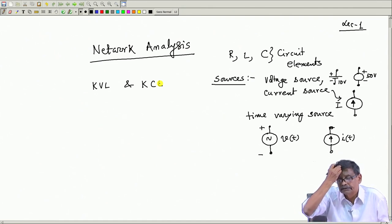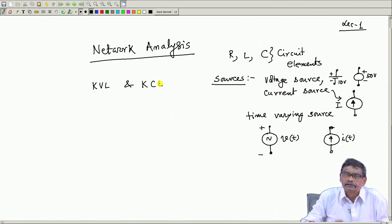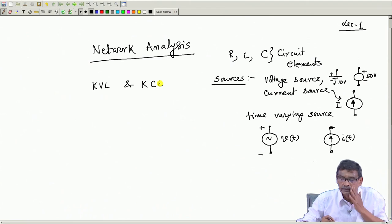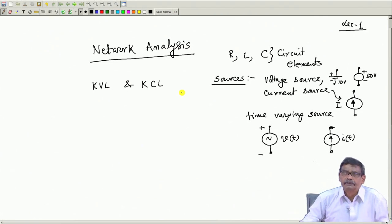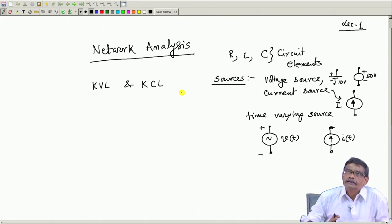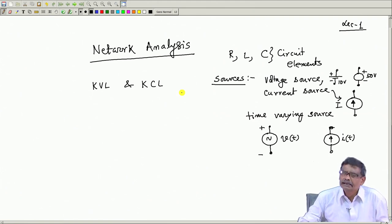KVL states that in any circuit the sum of the voltages will add up to zero. KCL — Kirchhoff's current law — states that the sum of the currents at a particular junction of a given circuit will add up to zero. With just this knowledge of KVL and KCL, any circuit can be solved.